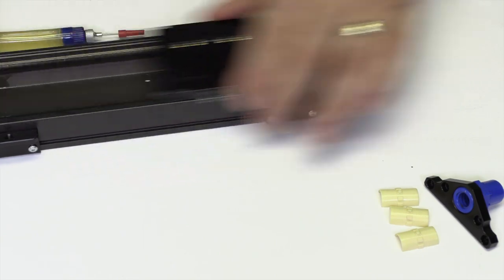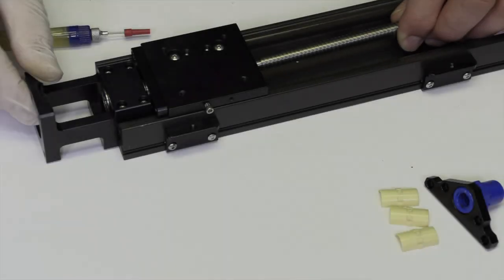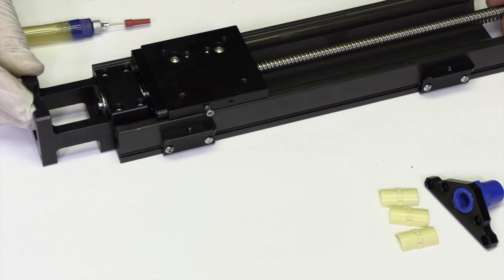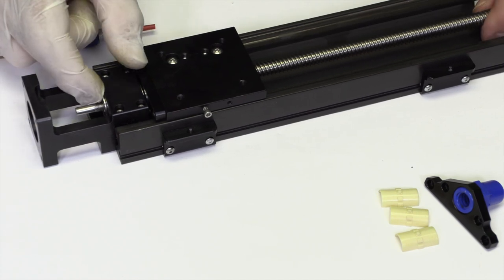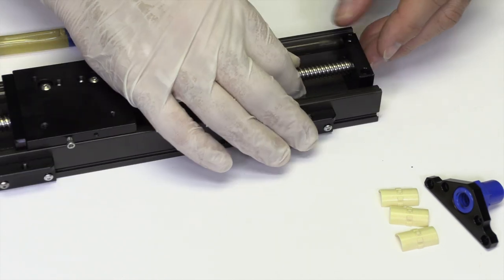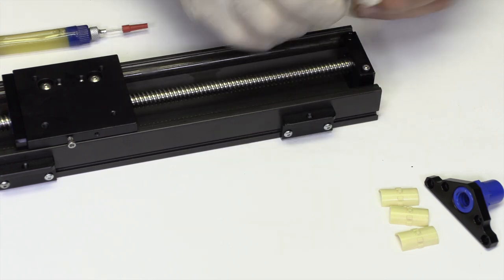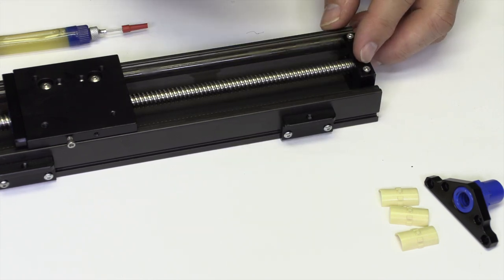Position the carriage close to the drive end and feed the lead screw into the drive end first. Install the reassembled idler end mount onto the lead screw. The mounting bolts should be loosely installed.